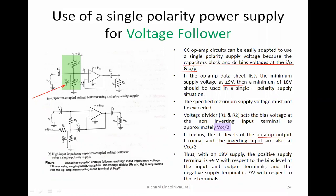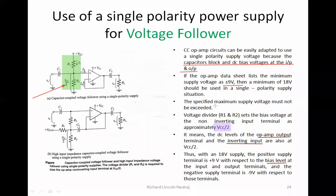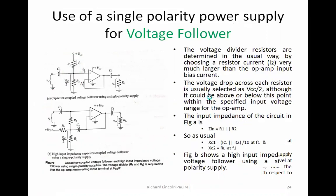With an 18-volt supply, the positive supply terminal is plus 9 with respect to the bias level at the input and output terminals, and the negative supply terminal is minus 9 with respect to those terminals. Bias means the supply we give in order to turn on the system and make it functional — here our system is the circuit.